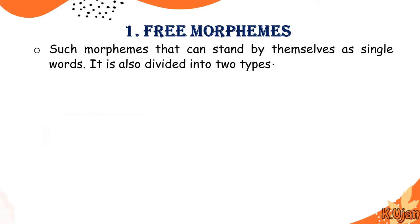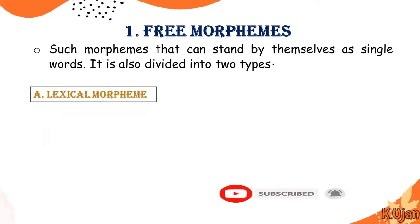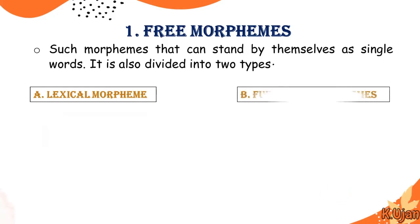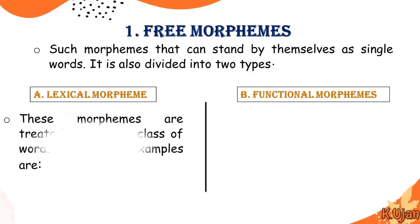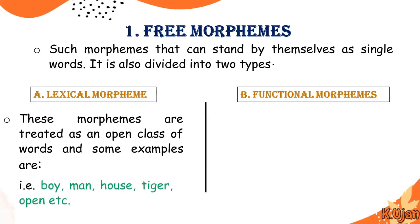Number one: free morphemes. These are morphemes that can stand by themselves as single words. Free morphemes are divided into two types: lexical morphemes and functional morphemes. Lexical morphemes are open-class words. These morphemes are treated as an open class of words. Some examples are: boy, man, house, tiger, open, etc.